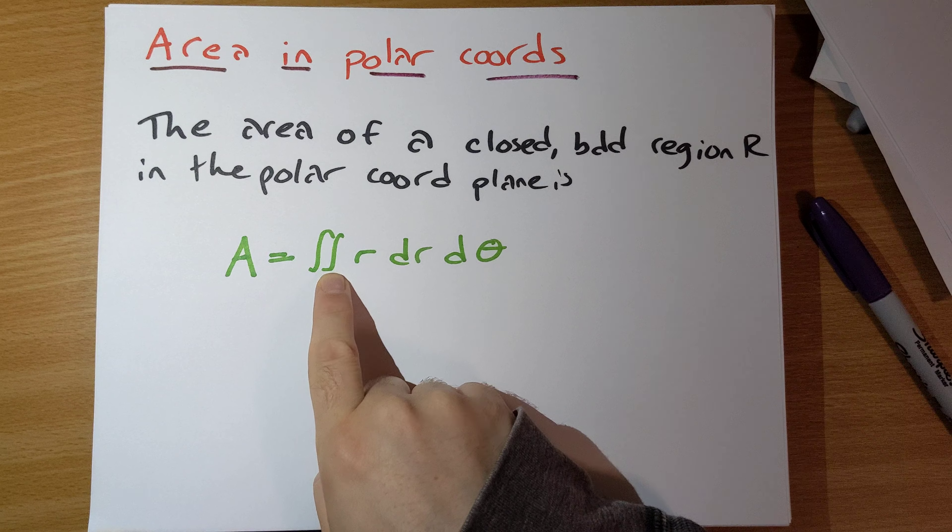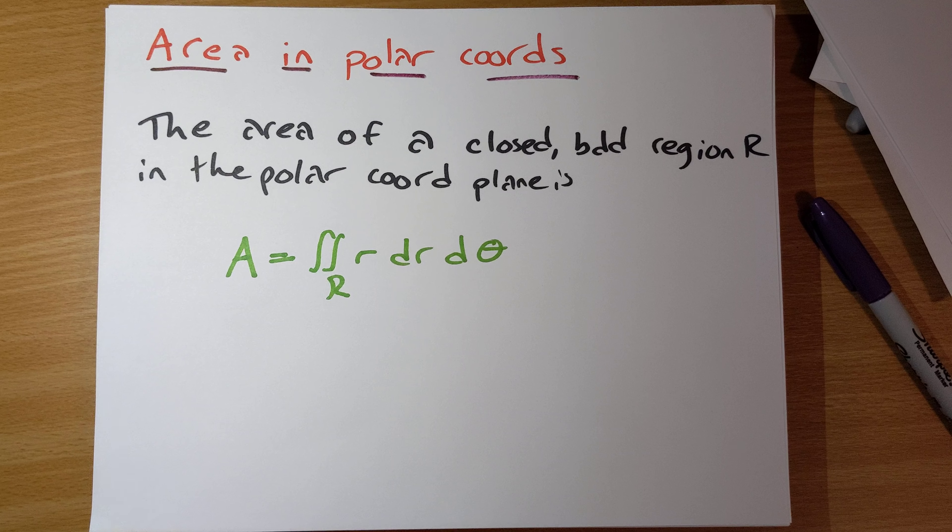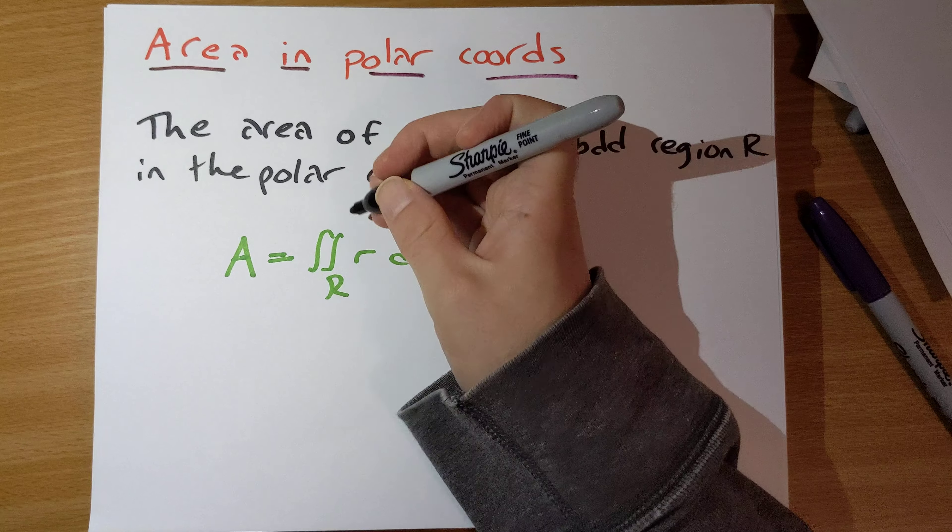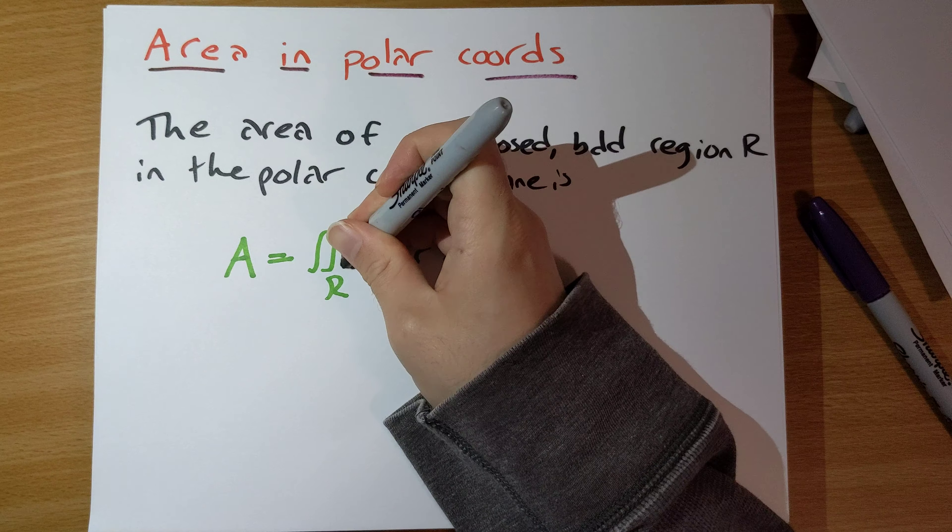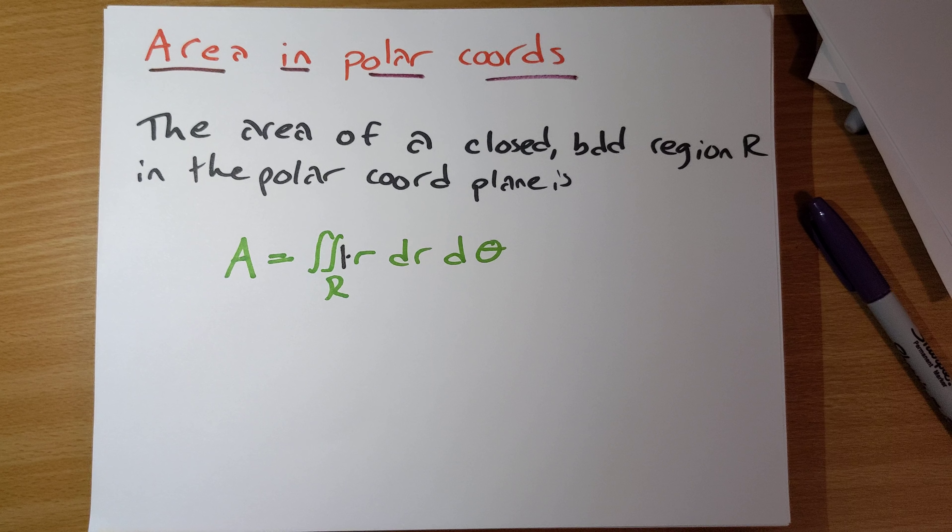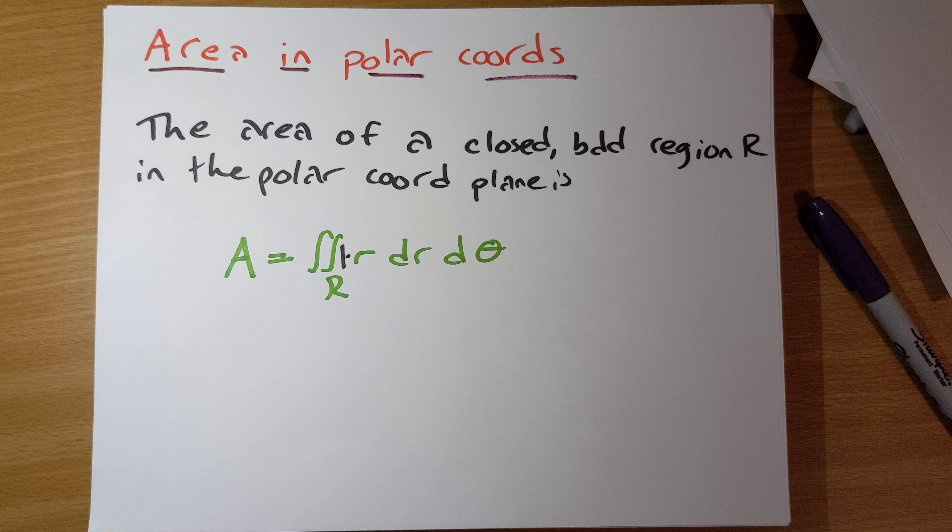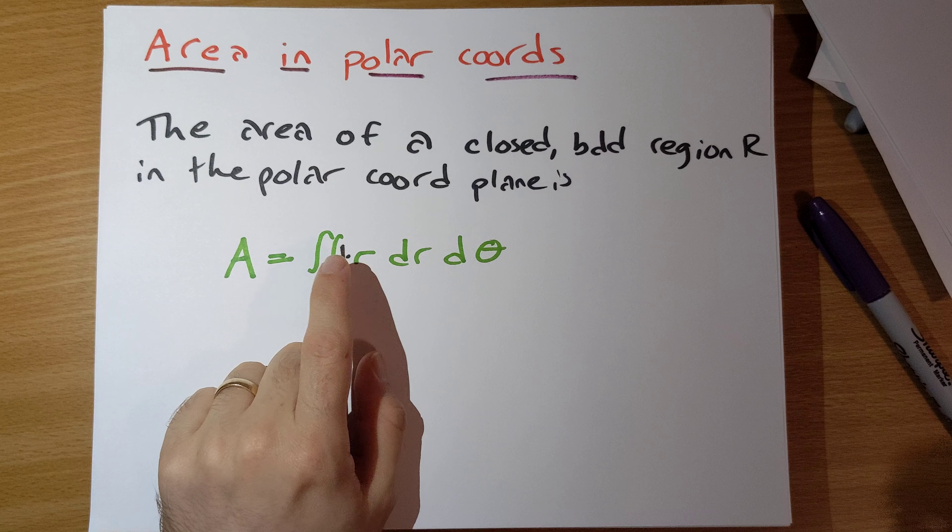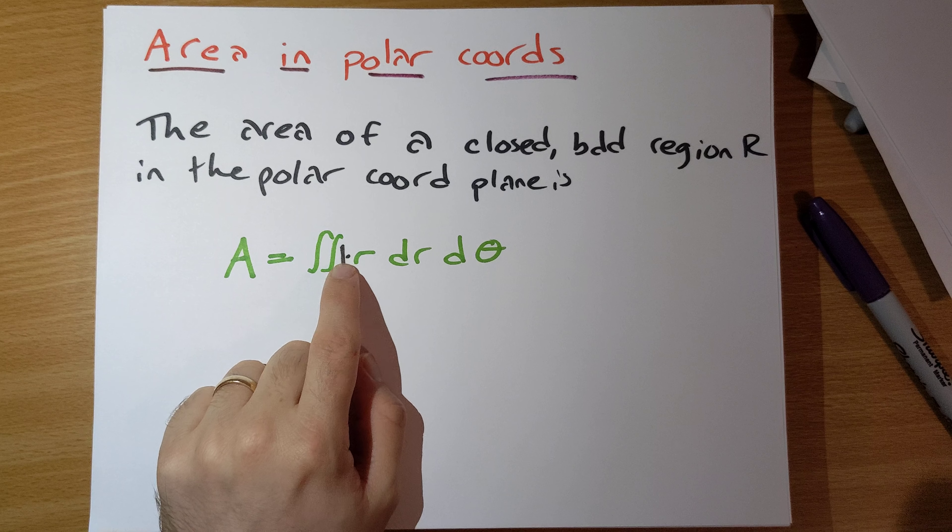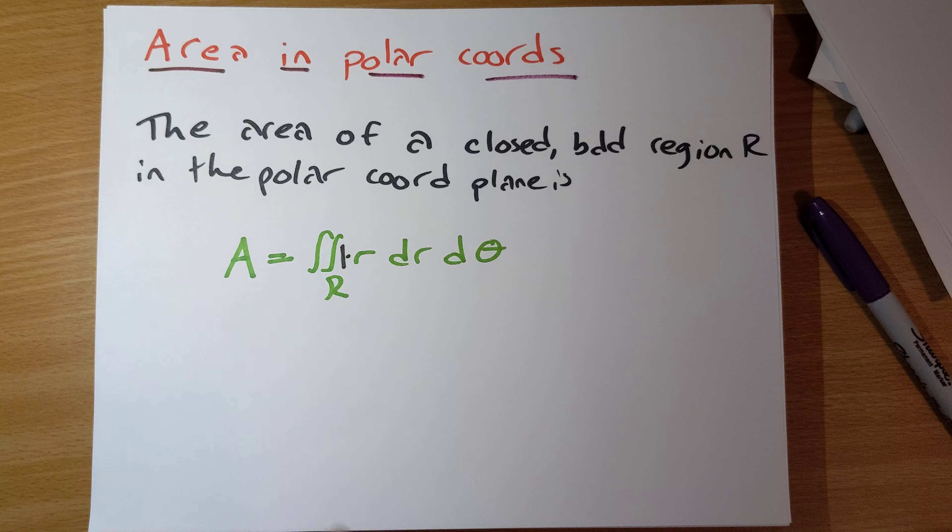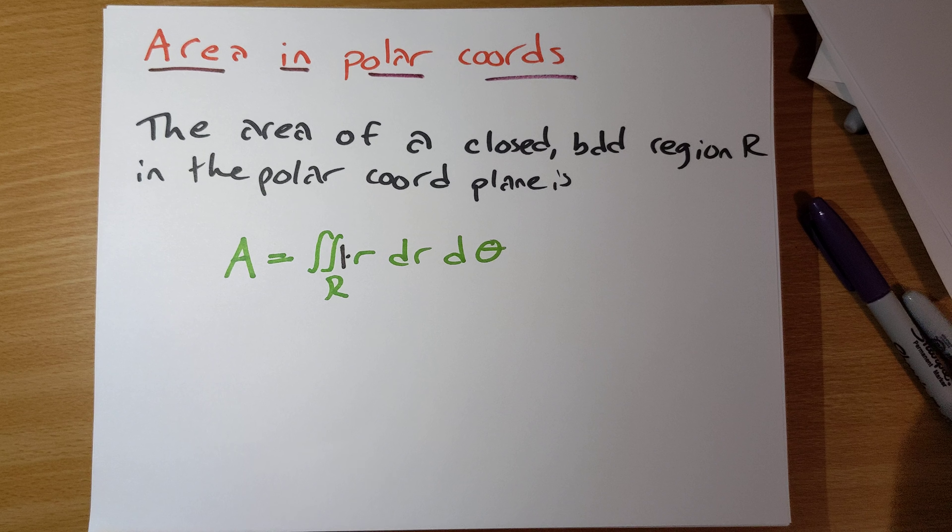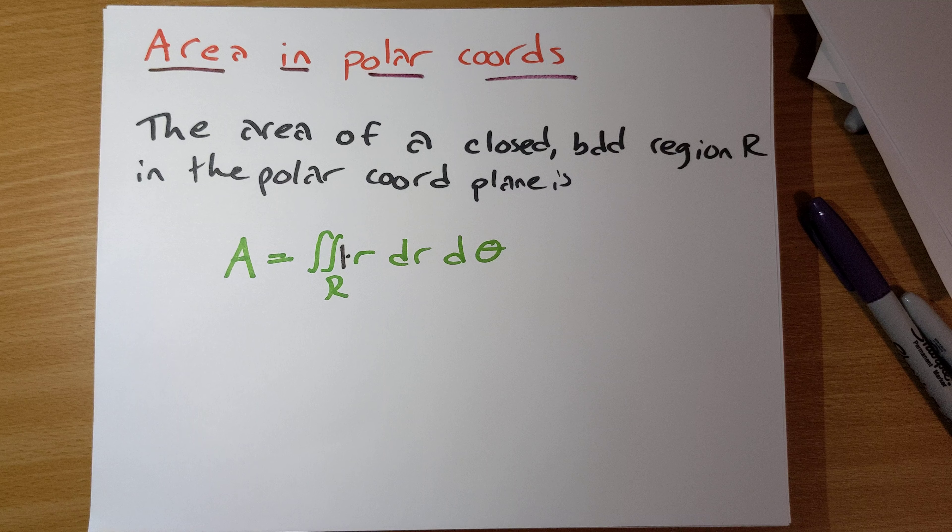Let's point out that this formula makes sense here. When we want to compute area, we integrate the constant function 1. And so here we're integrating 1 times r. That r just always gets thrown in. So this is our formula.